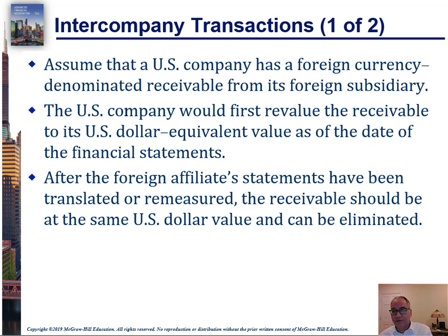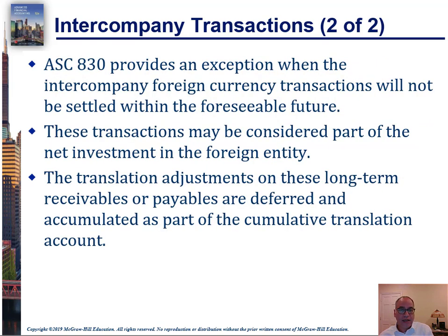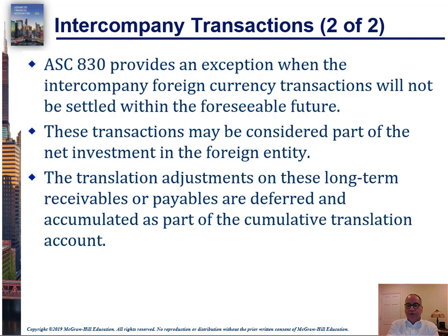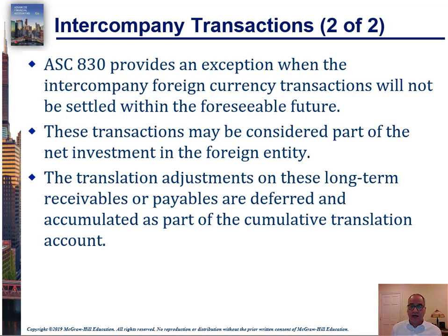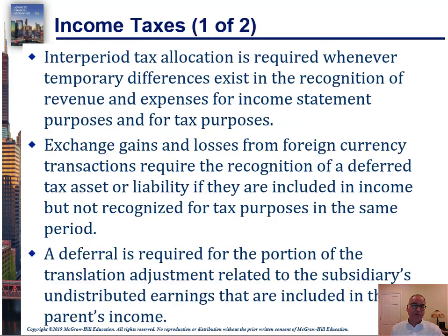If a company has a foreign currency denominated receivable from a foreign subsidiary, those need to be equal in order for your consolidation to work. So the U.S. company has to revalue the receivable to its U.S. dollar equivalent as of the date of the financial statements. Afterwards, the receivable should equal the dollar value so they can be eliminated when you do your consolidation. When intercompany foreign currency transactions are not expected to be settled within the foreseeable future, they can be considered part of the investment in the foreign entity. This avoids problems with intercompany payables and receivables — they can be included in the investment itself. What this does is defer the gains or losses on the receivables and payables that would start to accumulate, simplifying the accounting a lot.